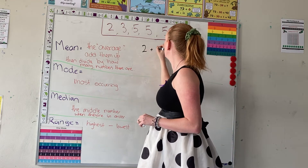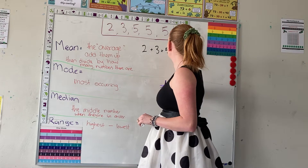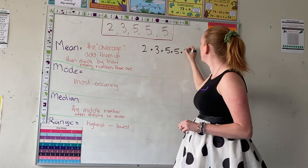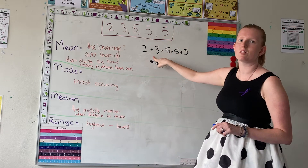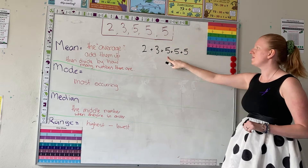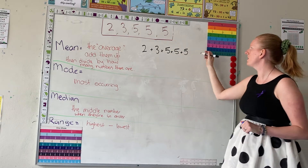So we've got two, three, five, five, and five. We're going to add those together: two plus three is five, five plus five is ten, that's fifteen, that's twenty.